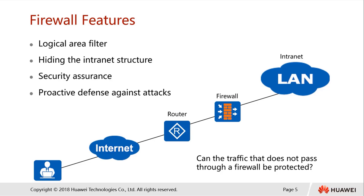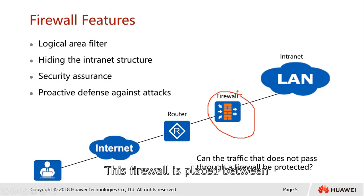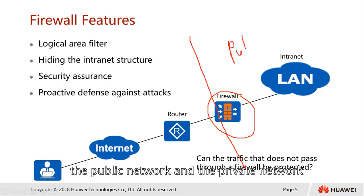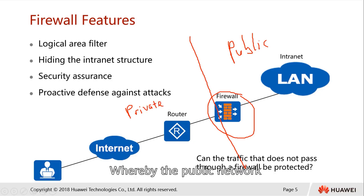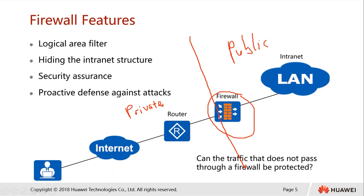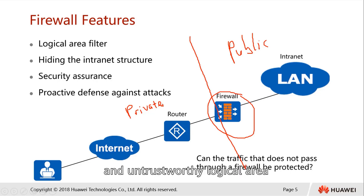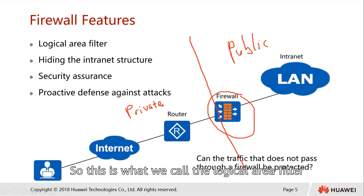Let's talk about the logical area filter. The firewall is placed between the public network as well as the private networks. Our private network is our internal network — usually our trustworthy domain — while the public network is untrusted. So the firewall can, based on this difference in terms of domains, set up a trustworthy logical area as well as an untrustworthy logical area, and then apply a certain security policy across this area. This is what we call the logical area filter.